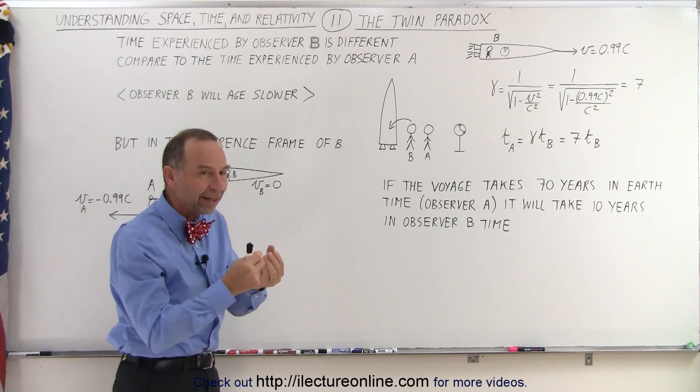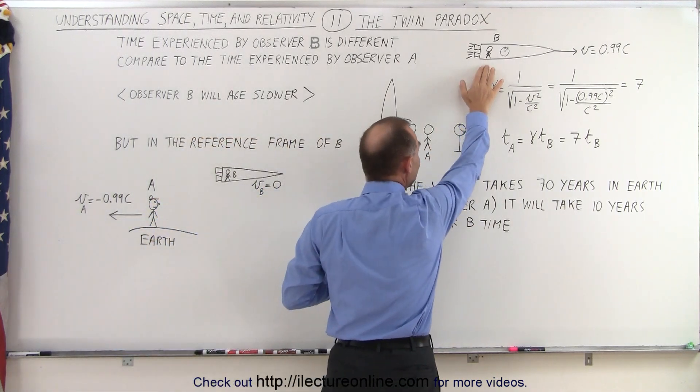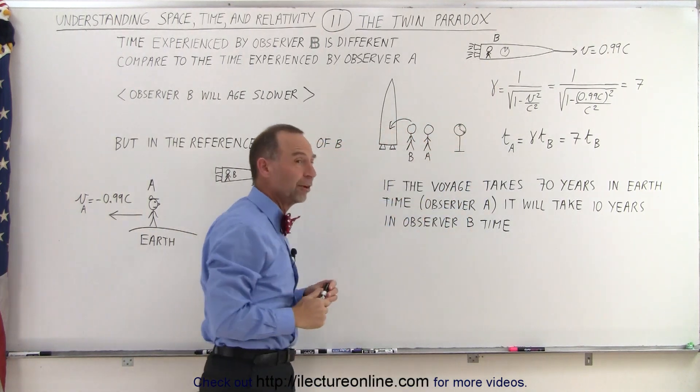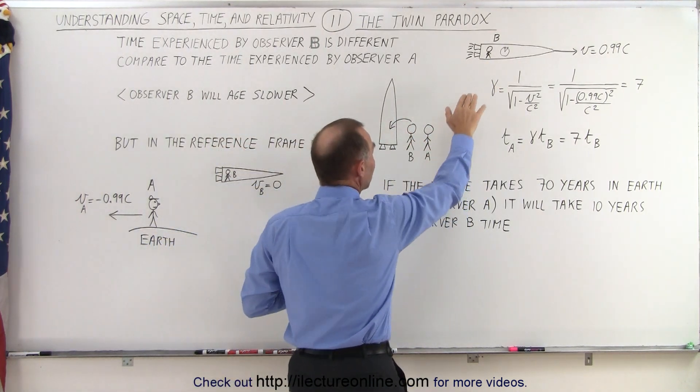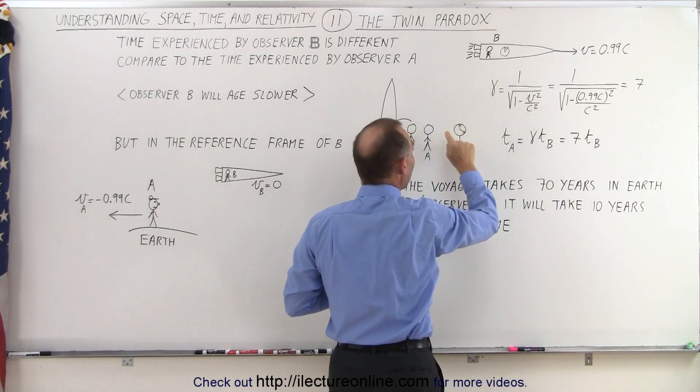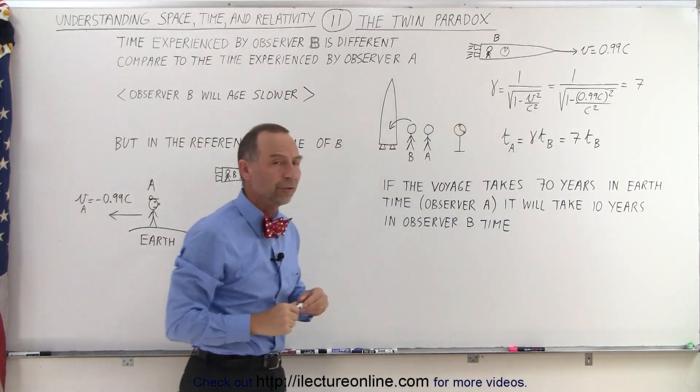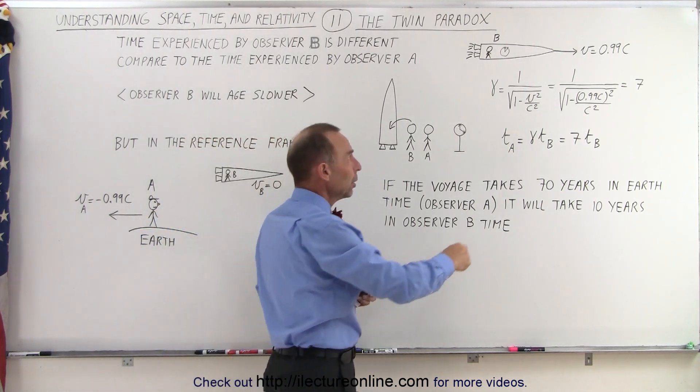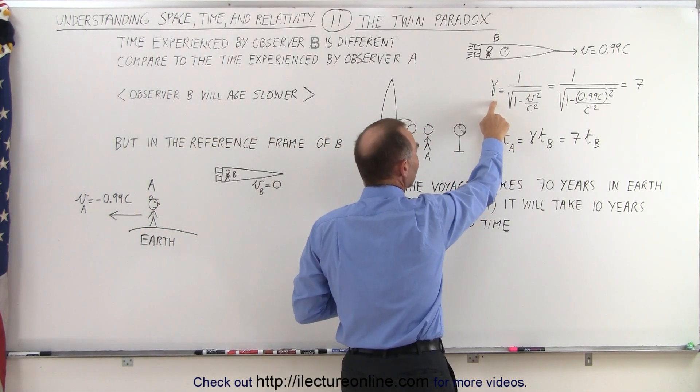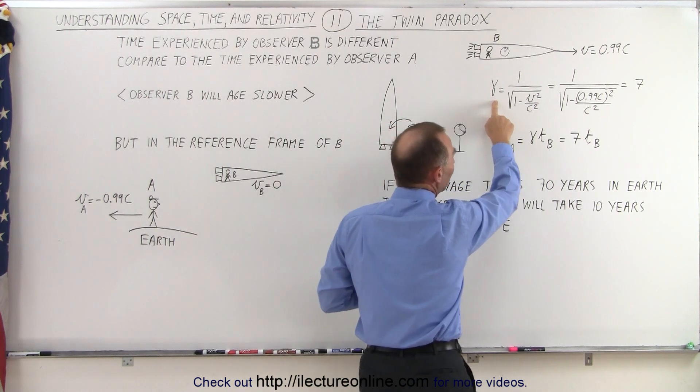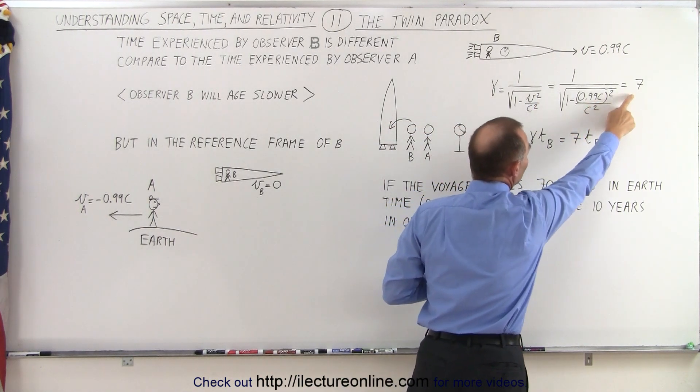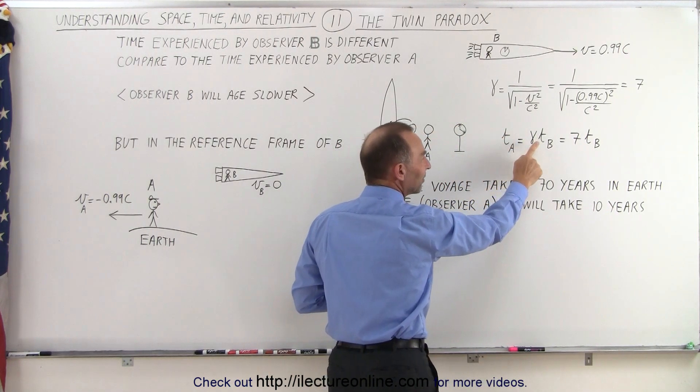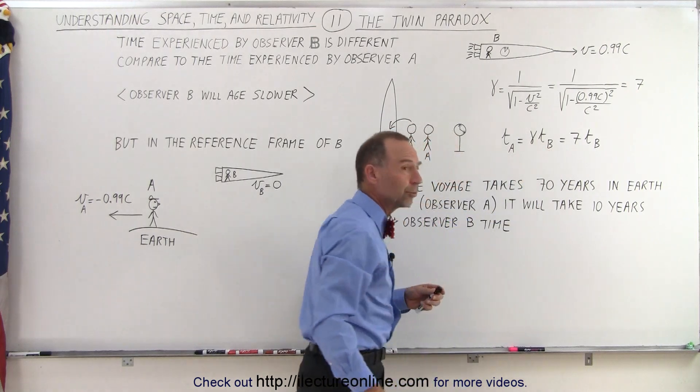We then realize that the time experienced by observer B on the spaceship is going to be very different from the time experienced by observer A. It turns out time for observer B will be much slower than time observed by observer A left on the Earth. If we then calculate what the time difference would be, we look at the Lorentz factor here, gamma, and we find that at 0.99C, that is equal to 7, which means that the time experienced by observer A is 7 times the time experienced by observer B.